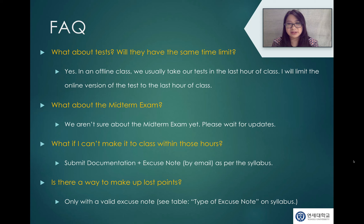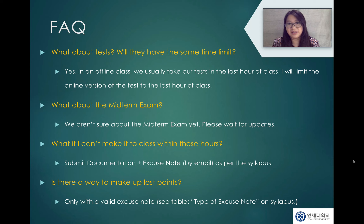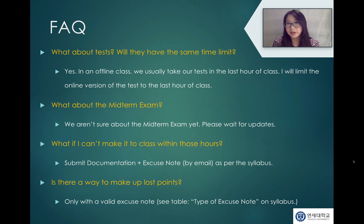Number two: what about the midterm exam? We're not sure about the midterm exam yet, so please wait for more updates. Number three: what if I can't make it to class within those hours? I understand it can be difficult, especially if you're not in Korea and not in the same time zone. If that is the case, or if you have another reason for missing class, you must submit documentation and an excuse note according to the syllabus. Number four: is there a way to make up lost points? Yes, but only with a valid excuse note. Please check the table in your syllabus called 'types of excuse notes' — you will see how each type of excuse is penalized differently.